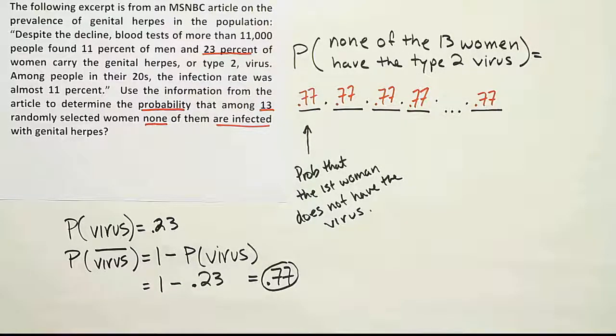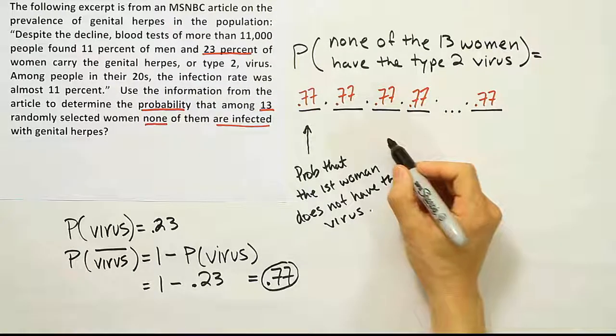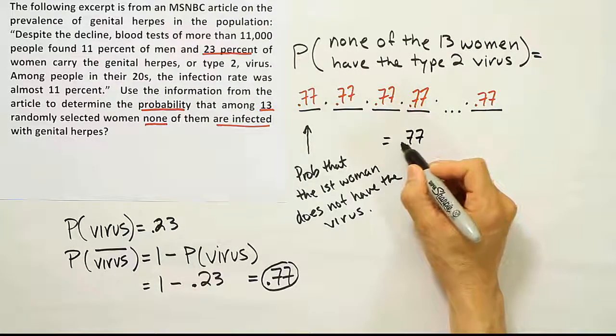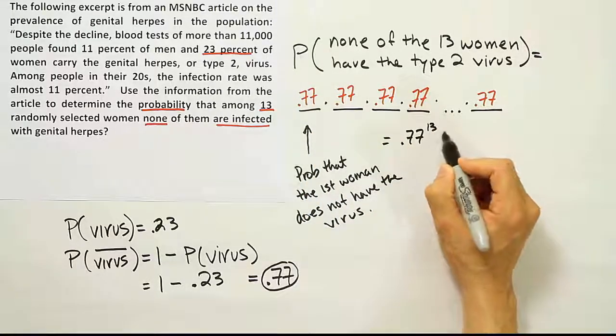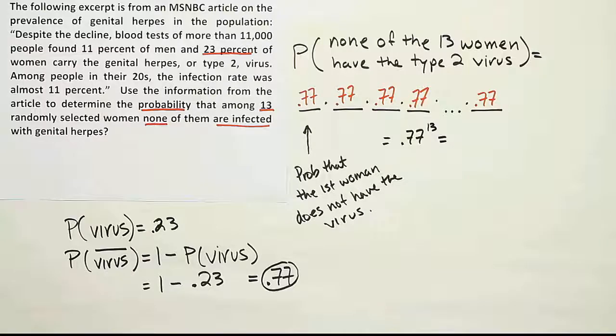Now that means that our overall solution is 0.77 to the 13th power, because there are 13 of these numbers multiplied together, and that will give us the answer. Let's see what that number turns out to be.